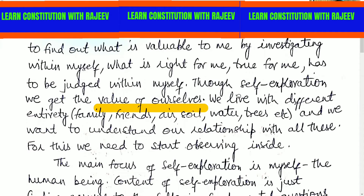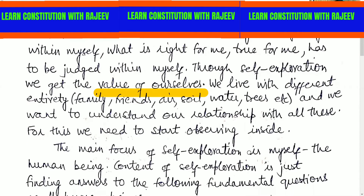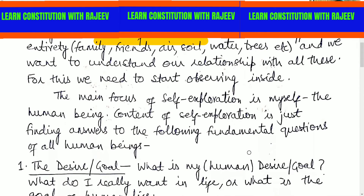As we know, we live with different units. We live with our family, our friends, our teachers, and if we talk about abiotic non-living factors, we live with air, soil, and water. We also have interactions with trees and animals. If I want to know what is my relationship with them and what is my value in the larger order, I will find the method of self-exploration.